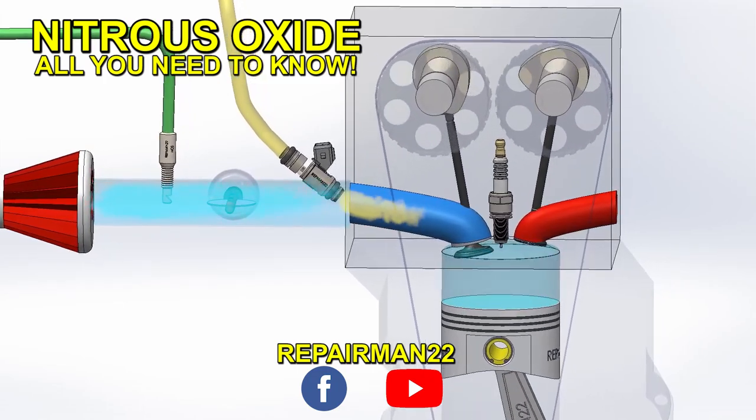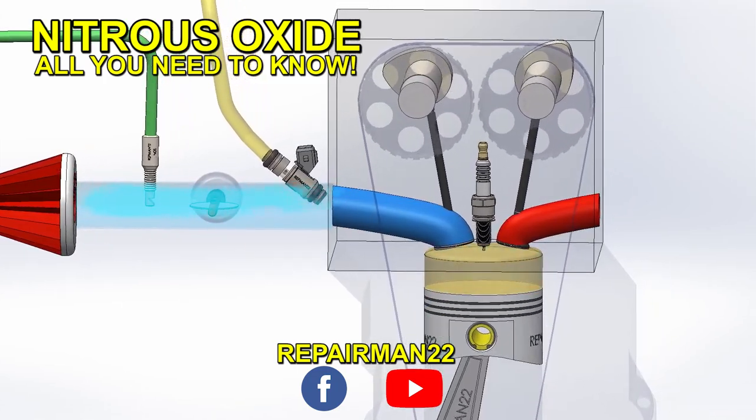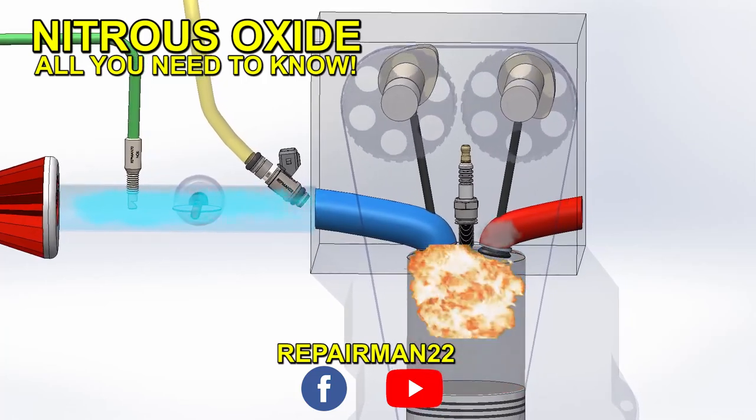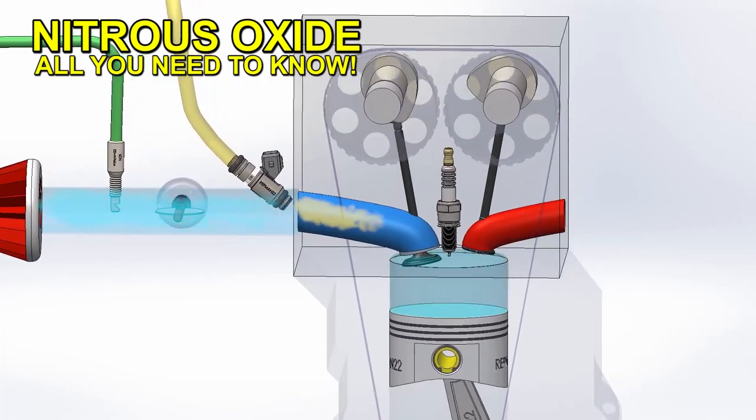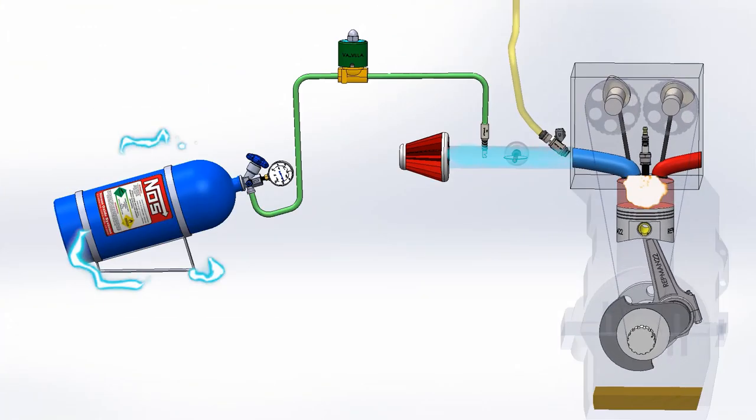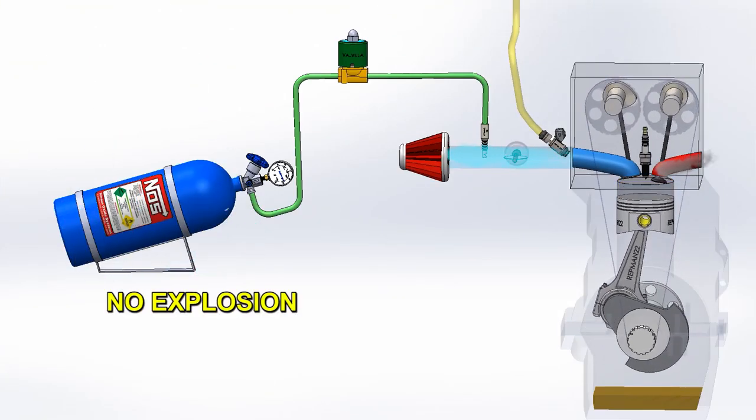If we want fire inside the engine, we need oxygen and we need fuel. Otherwise, combustion cannot occur. Nitrous oxide is not a fuel. Actually, it's the replacement of the air. If we put a spark near the nitrous, nothing will happen.